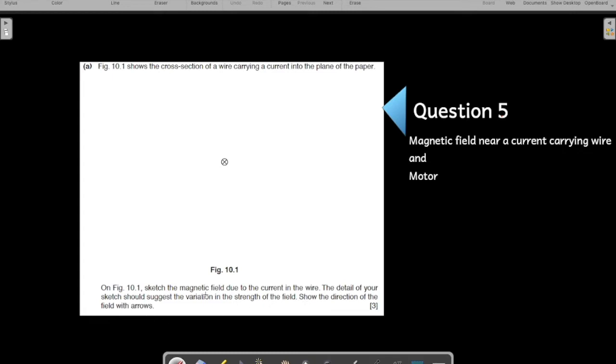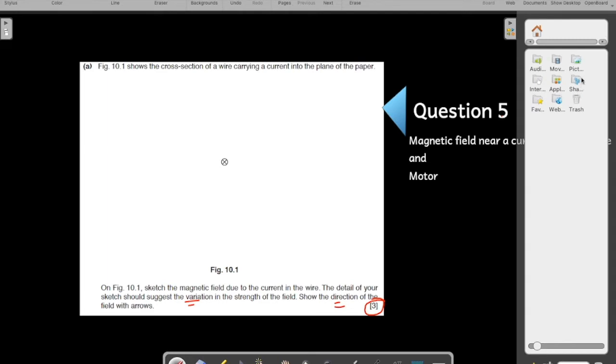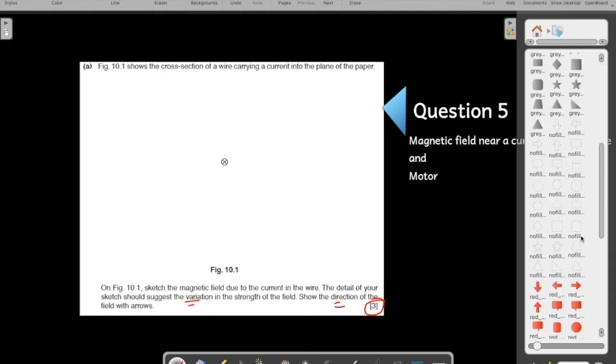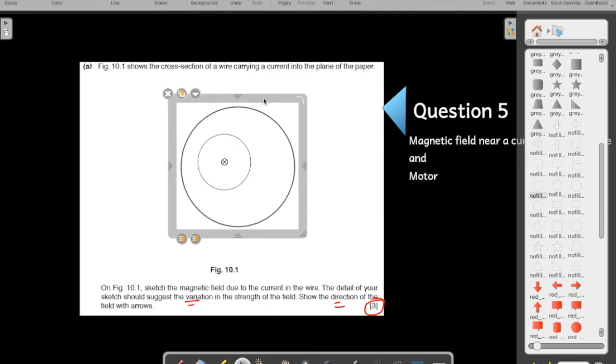Show the direction of the field with the arrows. So, so many information that they are looking for. Variation, direction, it is a three mark question. You all know that the magnetic field lines would be concentric circles. So, let us introduce some concentric circles here. If you have not gone through the theory of this chapter, you can go through it. We have covered this chapter already. So, let us draw a few concentric circles here.